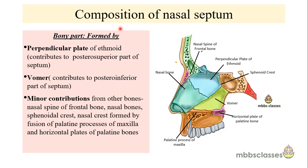The bony contribution of the nasal septum is mainly by two bones. The perpendicular plate of the ethmoid forms the posterior superior part of the septum and is attached superiorly to the skull base and cribriform area. The vomer contributes to the posterior inferior part of the septum. Minor contributions are by the nasal spine of the frontal bone, nasal bones, and the maxillary crest, which is formed by the palatine process of the maxilla and the horizontal plate of the palatine bone.